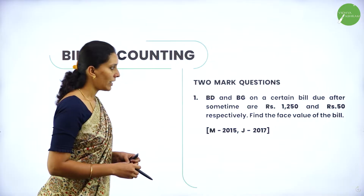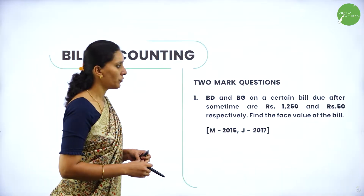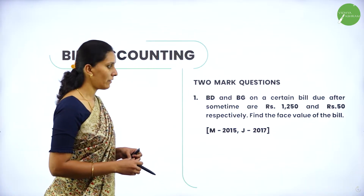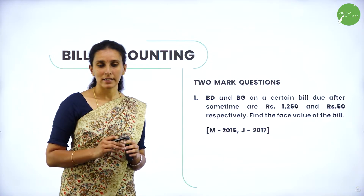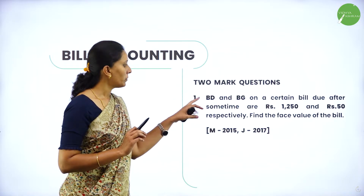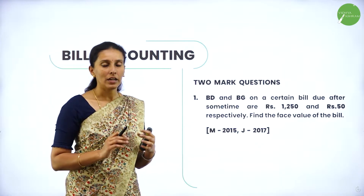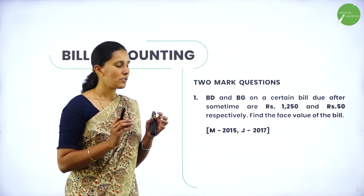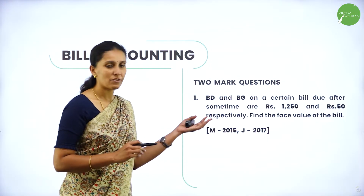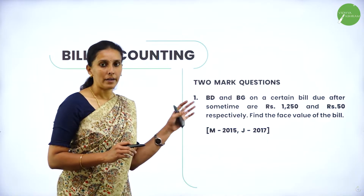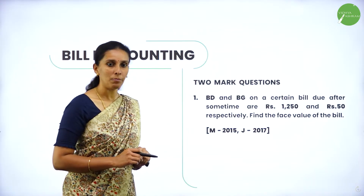First question: Banker's discount and banker's gain on a certain bill due after some time are rupees 1250 and rupees 50 respectively. Find the face value of the bill. Most terms in bill discounting are abbreviated: BD for banker's discount, BG for banker's gain, FV for face value, DV for discounted value, T for time, BP for bill period, DD for date of drawing. You should know these terms correctly before starting the problems.